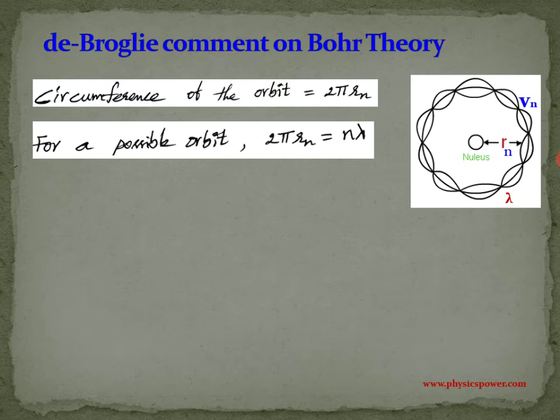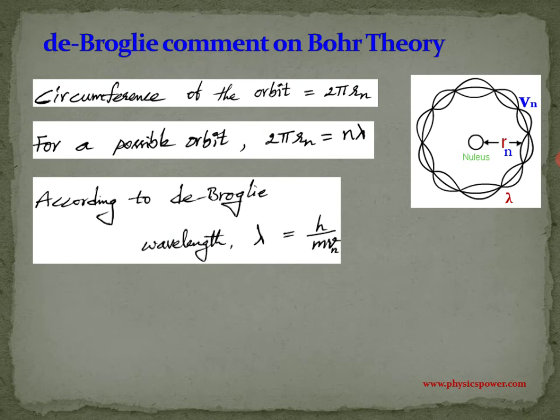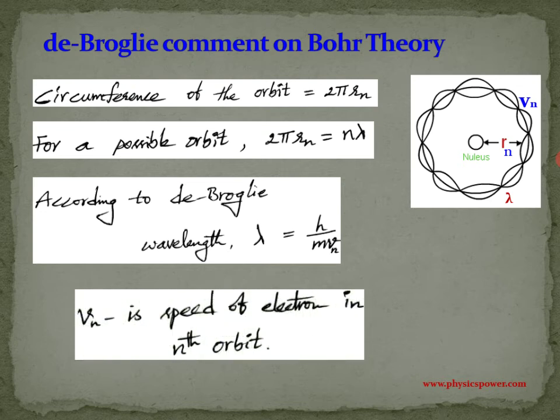Further, using De Broglie wavelength: if the electron in the nth orbit revolves with a particular velocity, it has momentum. So the wavelength lambda equals h by p, which is h by mvn, where vn is the velocity of the electron in the nth orbit.